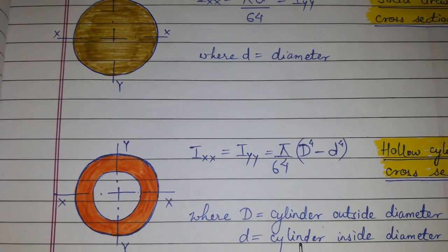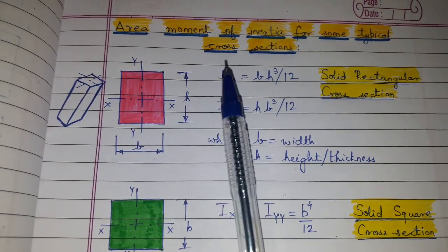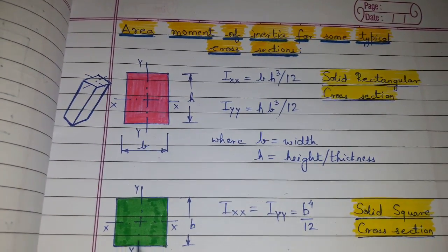So this was area moment of inertia for some typical cross-sections. Please like.